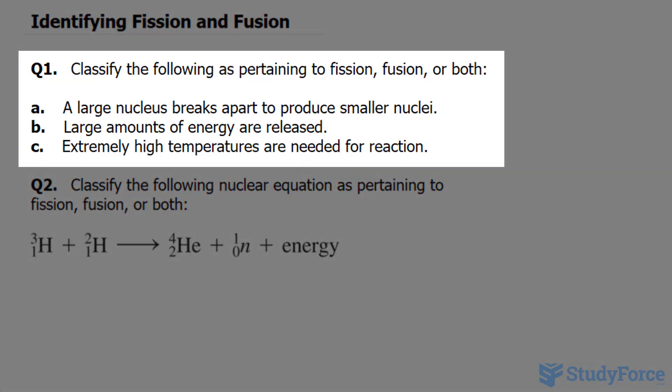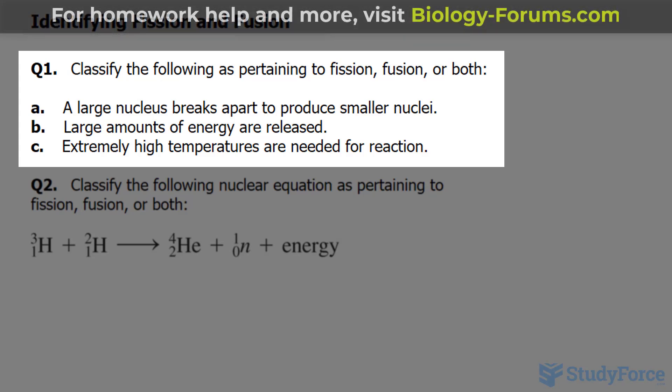Question 1 reads, classify the following as pertaining to fission, fusion, or both. For A, we have a large nucleus breaks to produce smaller nuclei.